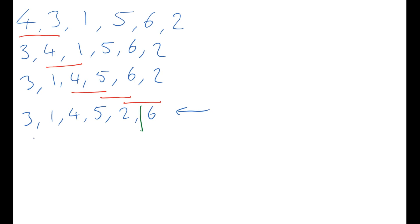So I'm going to compare the first and second numbers, the one and the three. The one is the smaller of those and so I'm going to move that there. I'm going to keep the three in my head. I'm now comparing the three that's in my head with the third number. Three is the smaller of those two, so I'm going to write it down.